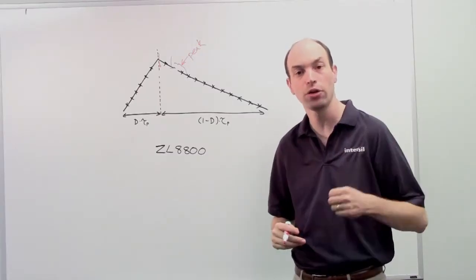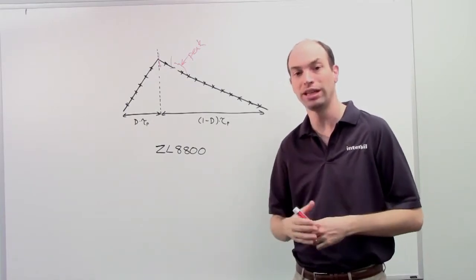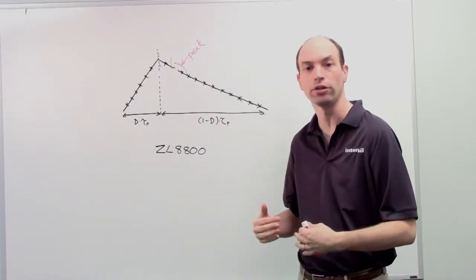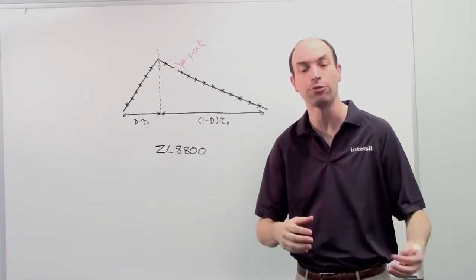For a peak current or for an overcurrent event, you get two settings: peak and average. And the same thing applies for undercurrent. There's also a peak undercurrent and an average undercurrent fault.